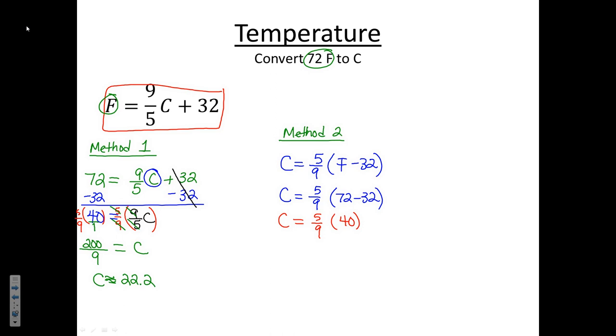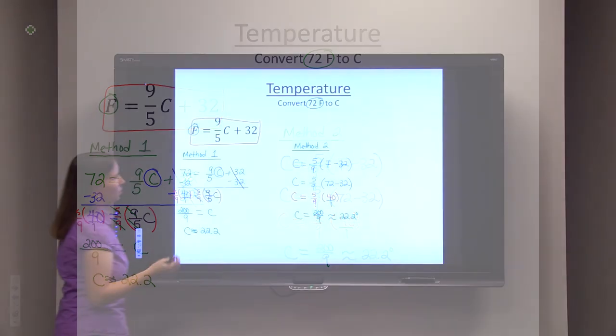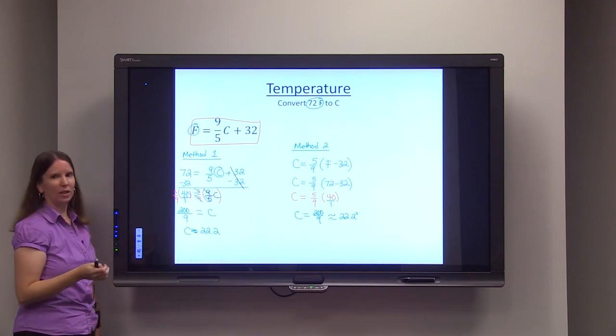And then we're back to the same spot we were in the previous problem. I can put this over 1 and multiply straight across, same place we were right here, 5/9 times 40 over 1, which we know gave us 200 over 9, which we know is approximately 22.2 degrees Celsius. So this is solving equations.